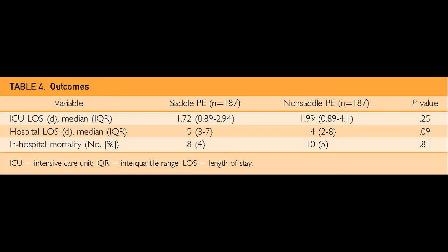The take-home message from this manuscript is: although Saddle PE patients tend to present with greater hemodynamic compromise, they have a low in-hospital mortality rate, which is similar to an age and severity matched cohort of non-Saddle PE patients. Thus, we suggest that optimal clinical management of Saddle PE patients should be based on initial as well as delayed hemodynamic status, rather than the location and extent of anatomic clot burden.